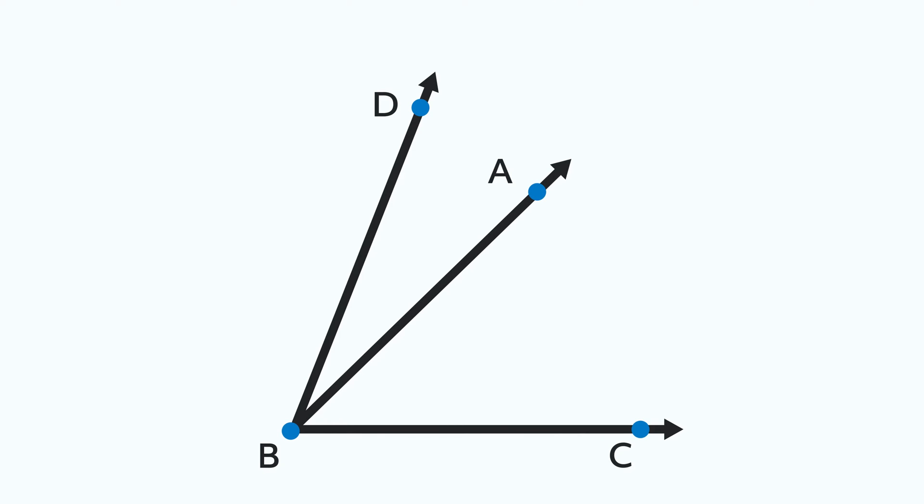Point B is the vertex of angles ABC, DBC, and DBA. If we ask someone to just look at angle B, they wouldn't know which of these we meant. So, it's important to be precise when dealing with more than one angle.